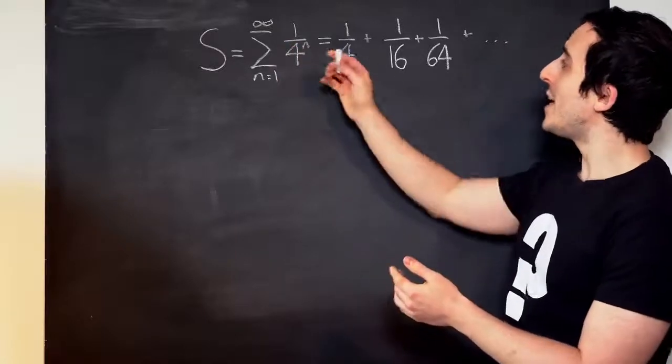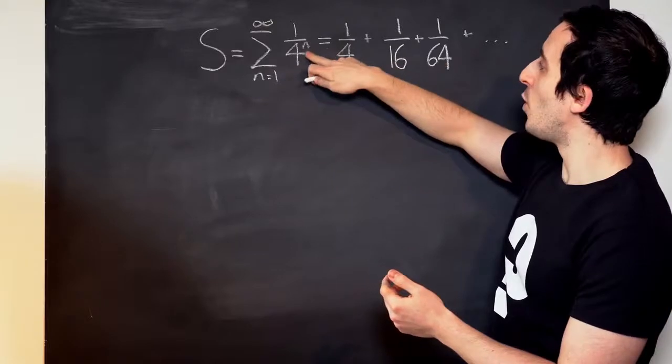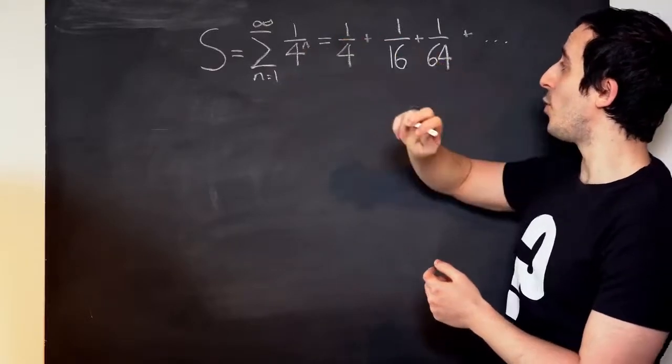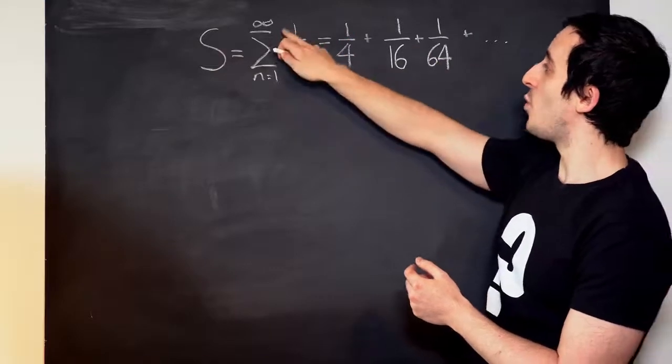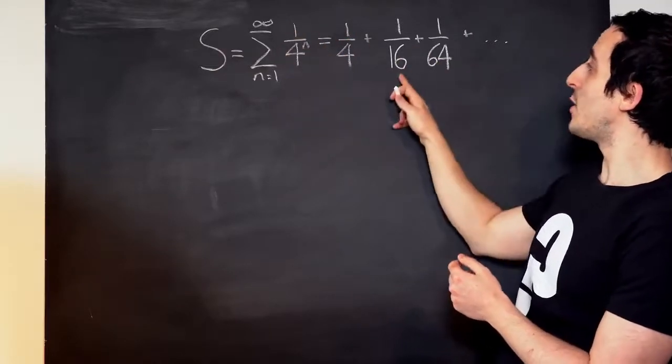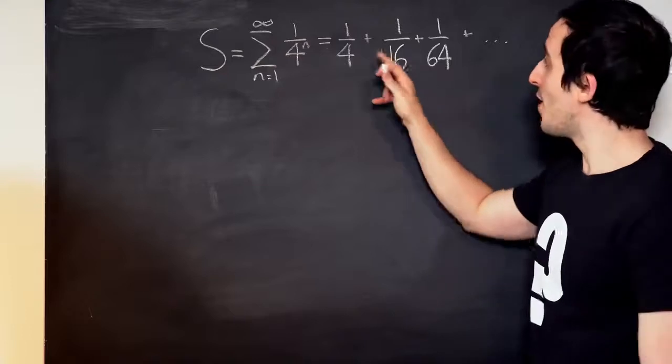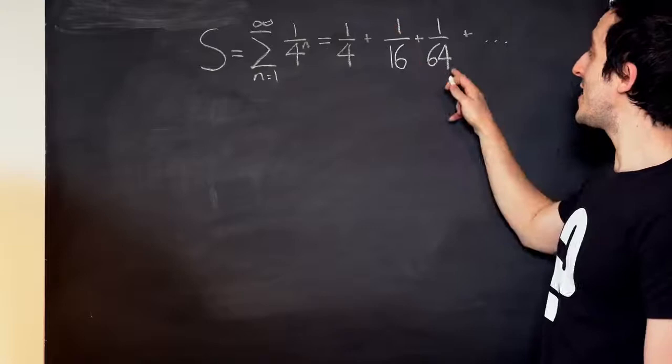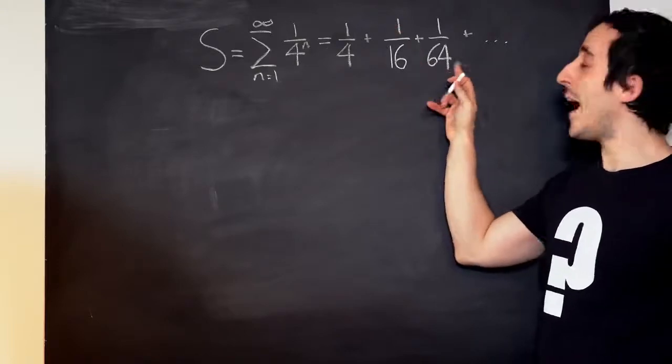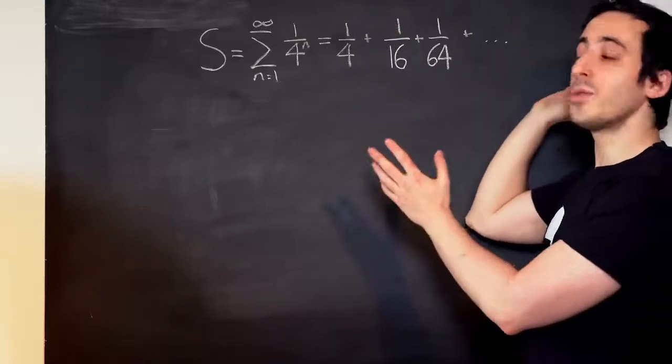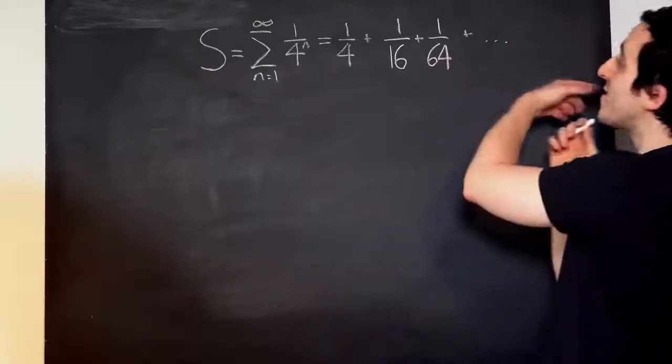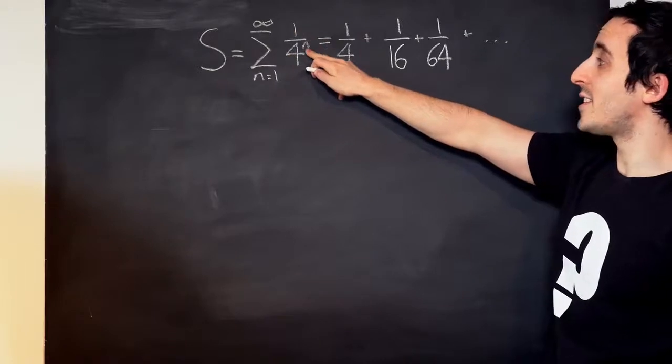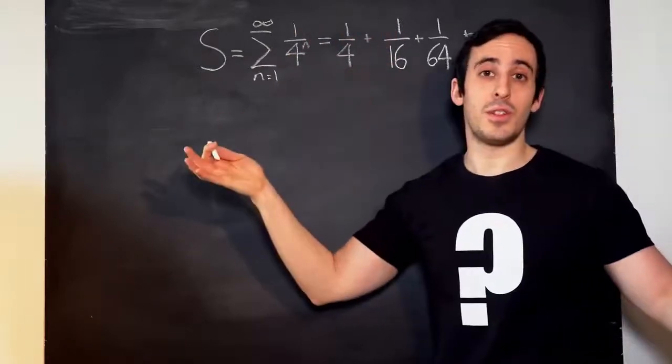So the first term is equal to one over four to the power of one. Now that is just a quarter, right? One over four. The second term is equal to one over four to the power of two. And that's equal to a sixteenth. The third term is equal to one over four to the power of three. And that's equal to a sixty-fourth. And so on and so on. Right up the way until we get to n equals infinity. So the infinitieth term in this sequence is equal to one over four to the power of infinity. And that, of course, is equal to zero.